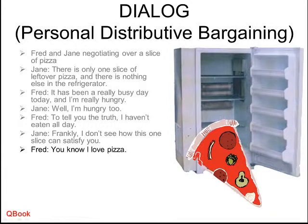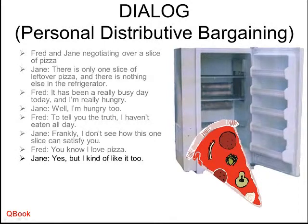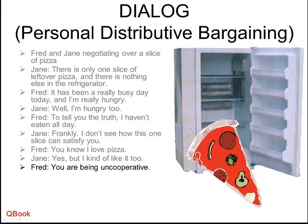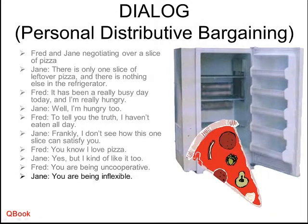Fred says: well, I love pizza — it's not just that I want to not be hungry, I really like to eat it. Jane responds: yes, but I kind of like it too. Then Fred says: you are being uncooperative. This echoes the idea from last unit — one side telling the other they're not working together. Jane fires back: you are being inflexible. In negotiation, both sides have to change something; otherwise, we'll never come to a conclusion.